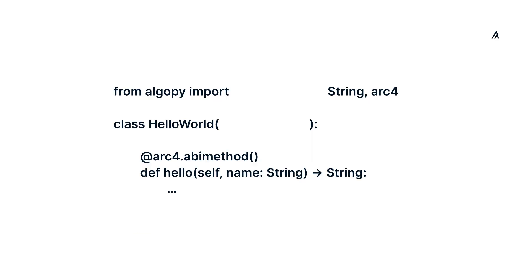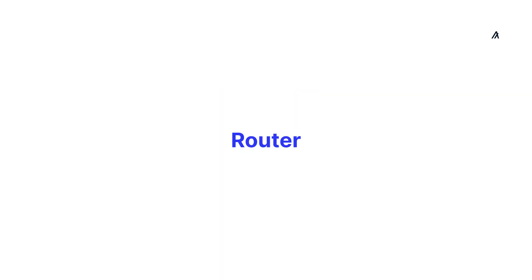To create an ARC4 contract with Algorand Python, you do so by inheriting from the ARC4 contract base class. When you extend the ARC4 contract, it automatically generates a router for you that routes contract method calls to the relevant ABI methods.